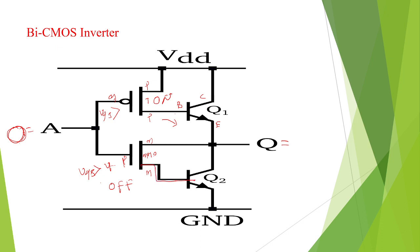Coming to the PMOS side: when you are giving 0, there is a sufficient VGS — 0 means negative, negative to negative gives forward bias — so it goes to on condition. The current will flow from source through gate to drain, to the base VB. There is a sufficient VB, so the BJT will go to on condition. With T2 and Q2 off, VDD flows through this direction, hence the output is high.